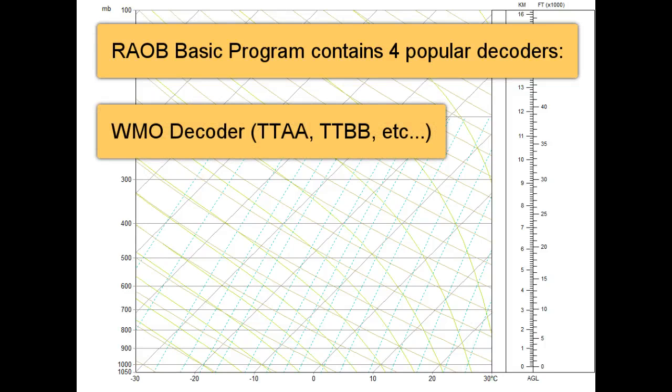First is the WMO decoder, with the familiar TTAA-TTBB coded data groups.